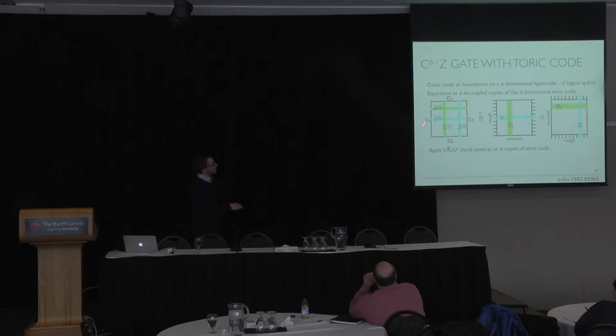So remember, this U here is the U which maps my color code on the hypercube onto d decoupled copies of the toric code. What such a unitary does is it starts with d copies of the toric code. It maps us back, U dagger maps us back to the color code setting. Then we apply an Rd phase gate transversely everywhere to each and every qubit. And then U maps us back to the toric code setting. What we checked is that such a local unitary indeed implements a gate from the dth level of the Clifford hierarchy, which is the d qubit control-Z gate.